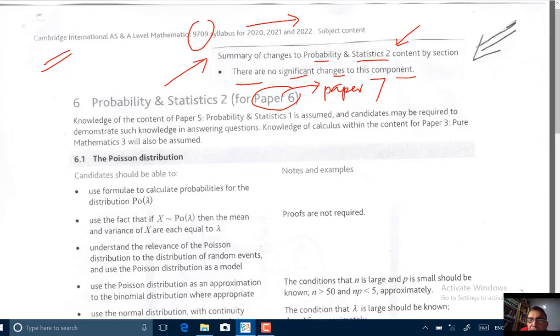We are talking about Probability and Statistics 2. Previously, it was Paper 7. Again, previously it was Paper 7. Now it is renamed Paper 6.